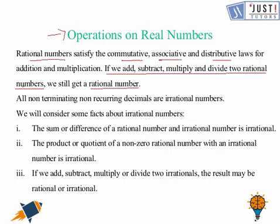All non-terminating and non-recurring decimals are irrational numbers. And if we add, subtract, multiply and divide two irrational numbers, the result may be rational or may be irrational. But if we find the sum or difference of a rational number with an irrational number, the answer is always irrational. And the product or quotient of a non-zero rational number with an irrational number is always irrational.